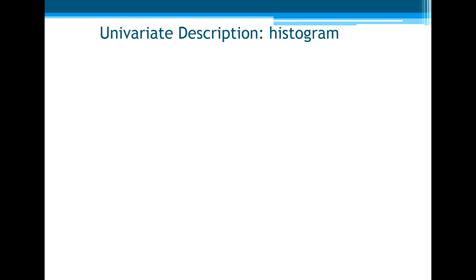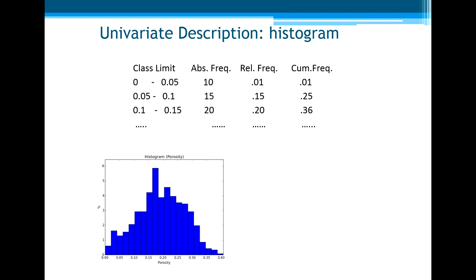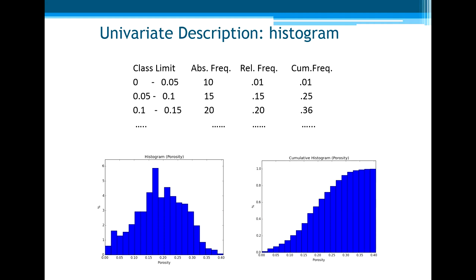Now let's come back to our real data. We can divide and build as many classes as we wish—we'll see this criteria a little bit later. And we can calculate the absolute frequency, relative frequency, and cumulative frequency, which gives us the relative frequency of the limit of each class. For example, lower than 0.15, we have 0.36, or 36 percent of samples are lower than 0.15. We can represent the histogram here, and also the cumulative histogram.